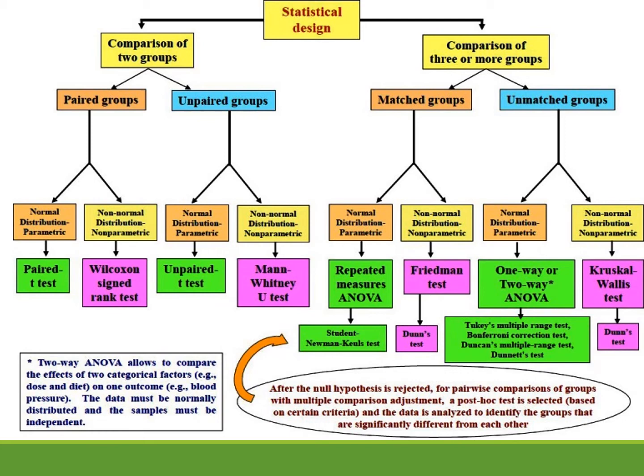For the unpaired groups, it is again divided into two. For normal distribution parametric, we use the unpaired test or the independent t-test. For non-normal distribution non-parametric, we use the Mann-Whitney U test.